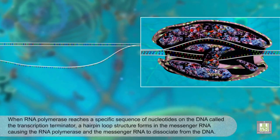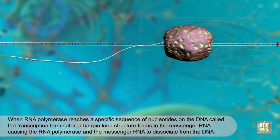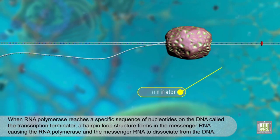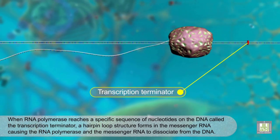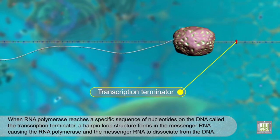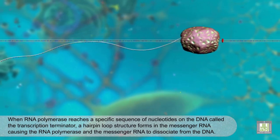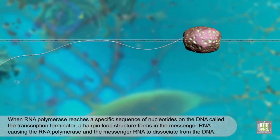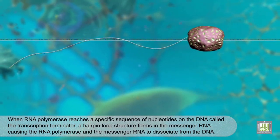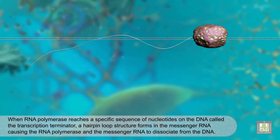When RNA polymerase reaches a specific sequence of nucleotides on the DNA called the transcription terminator, a hairpin loop structure forms in the messenger RNA, causing the RNA polymerase and the messenger RNA to dissociate from the DNA.